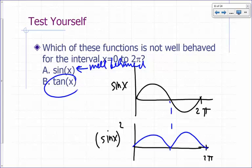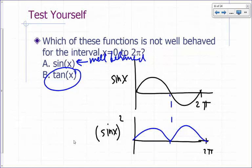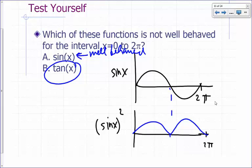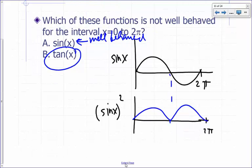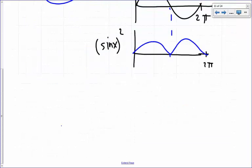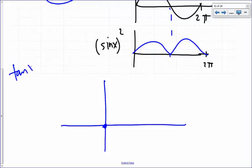What about tangent x? Well, you've got two choices here, so that must be the one that's not well-behaved. What does tangent x look like? First, it comes here to 2π. Tangent 0 is 0. Tangent, if you recall, is sine over cosine.